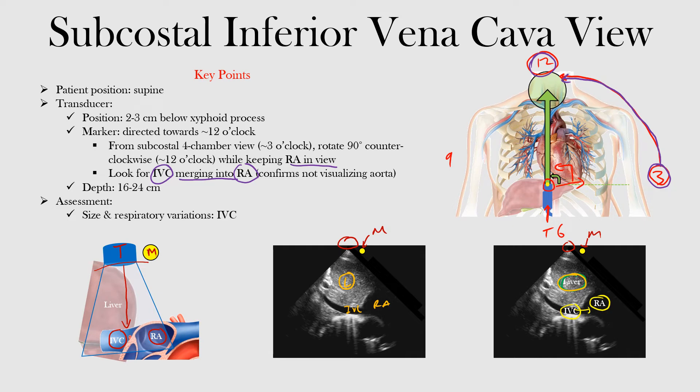This can be a good way of assessing fluid status at the bedside. This is the subcostal inferior vena cava view — you're looking for the inferior vena cava merging into the right atrium, going from the 3 o'clock position in the subcostal four-chamber view to the 12 o'clock position.